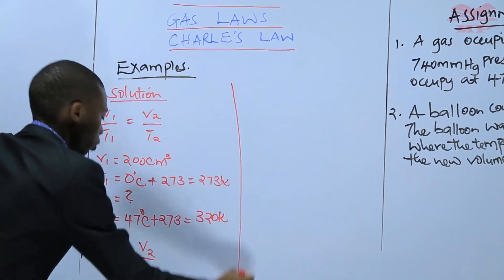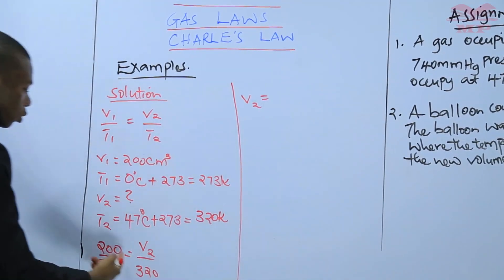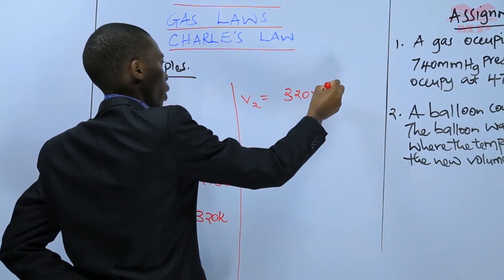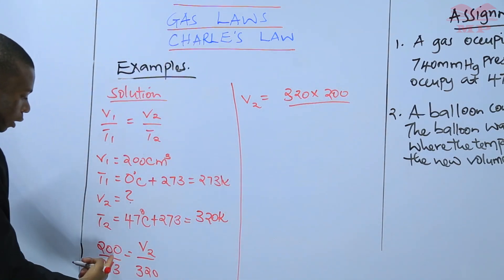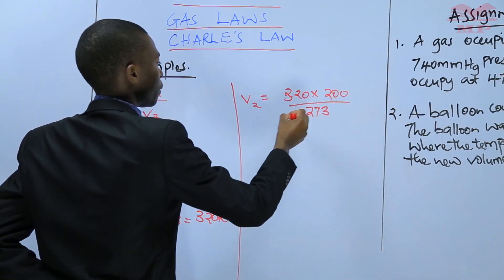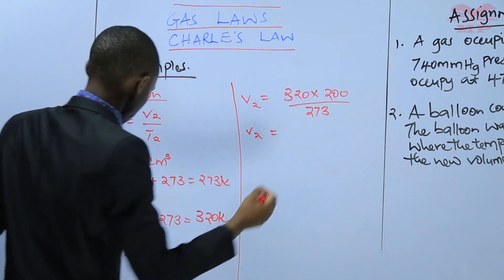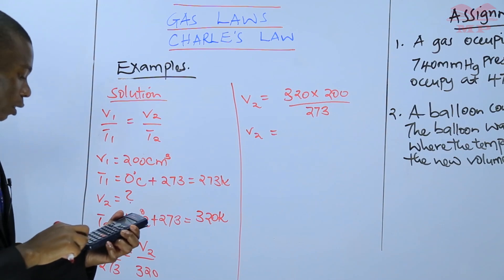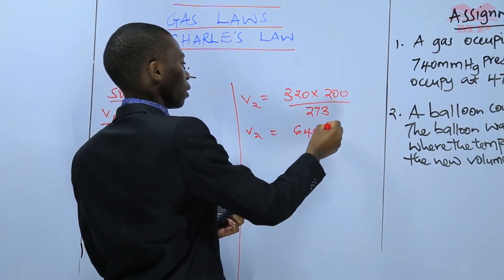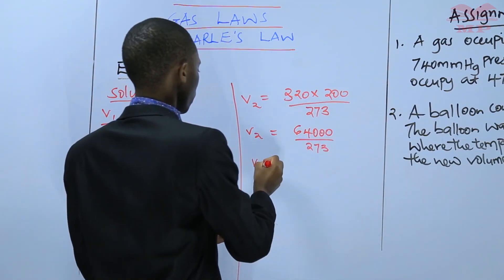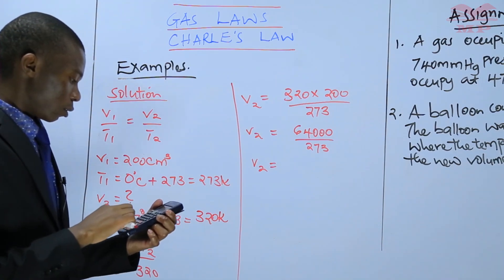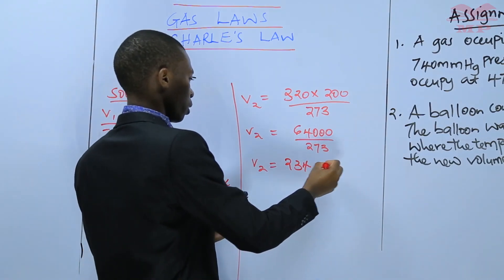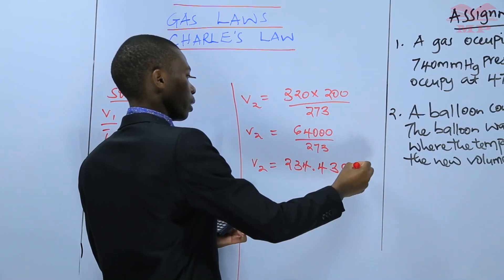To get V2, V2 will be given by, you just cross multiply, that is 320 times 200 divided by 273. Therefore, V2 is 320 multiply by 200. This gives you 64,000 divided by 273. The V2 will be 234.433 cubic centimeters.